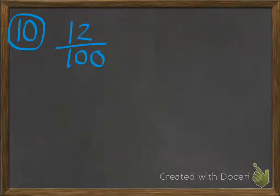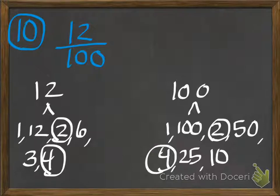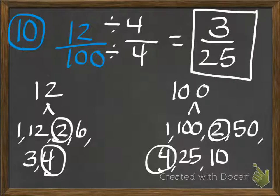Number 10: 12 one-hundredths. I see that both 12 and 100 can be divided by 2, and they can also be divided by 4. So I'm going to use the biggest of those — 4. I'm going to divide both the numerator and the denominator by 4. 12 divided by 4 is 3, and 100 divided by 4 is 25. I always think of quarters when I think of 100 divided by 4 — like 4 quarters, each worth 25 cents. So the simplest fraction is 3 twenty-fifths.